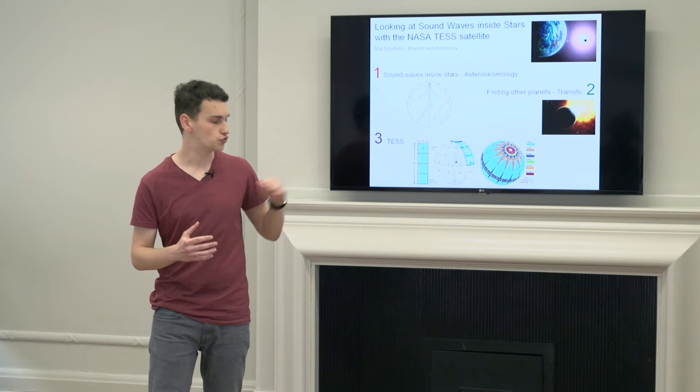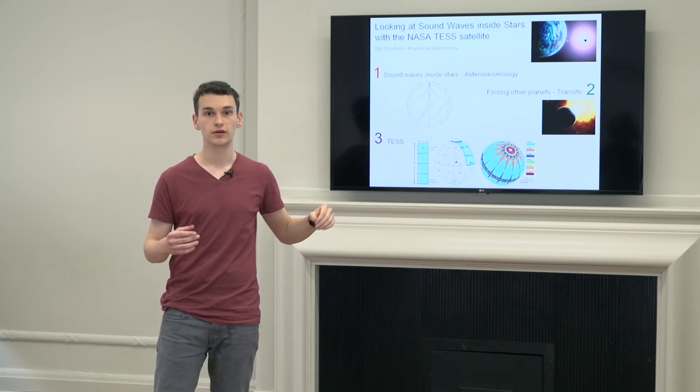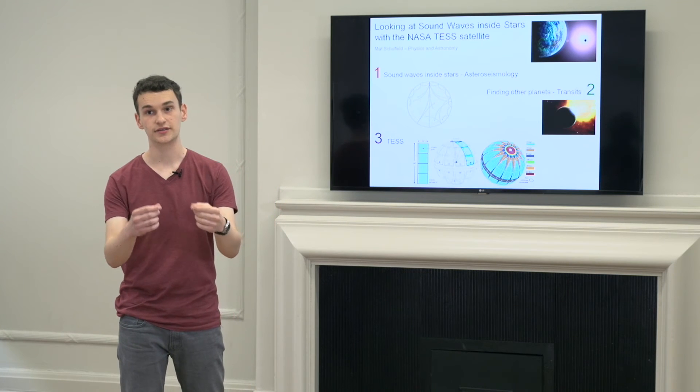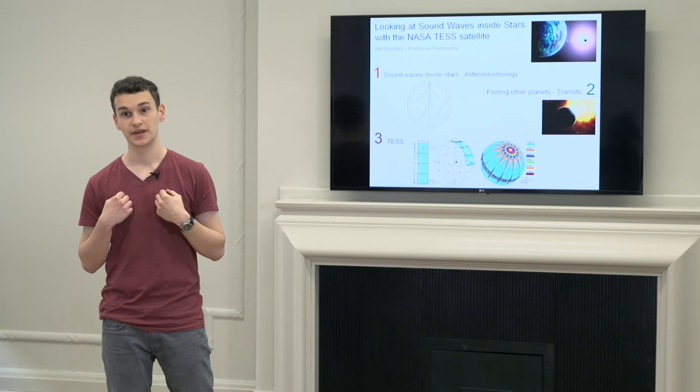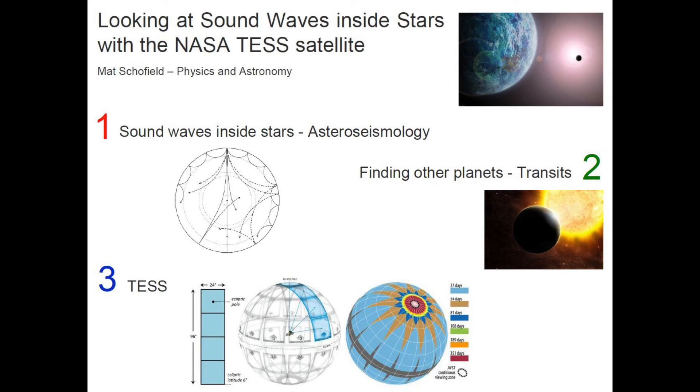So by measuring the drop in the amount of light we see from the star, we can know how big the planet is with respect to the star. And if we already know how big the star is thanks to studying the sound waves that exist inside it, well then we know how big the planet is and we can learn loads of other great things too - like how old the planet is and what it's made of.